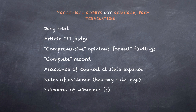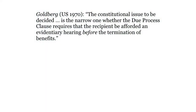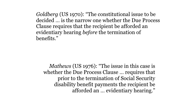Is there a way to predict more precisely what due process requires? A subsequent case, Matthews v. Eldridge, offers some guidance. The issue in Matthews is whether due process requires a pre-termination hearing under the Social Security Disability Benefit Program. If this sounds a lot like the framing of the issue in Goldberg, it is — in Goldberg, the constitutional issue is the narrow one whether the Due Process Clause requires that the recipient be afforded an evidentiary hearing before the termination of benefits; and in Matthews, the issue is whether the Due Process Clause requires that prior to the termination of Social Security Disability Benefit payments, the recipient be afforded an evidentiary hearing. In Goldberg, the recipient won on the issue, but in Matthews, the recipient loses.